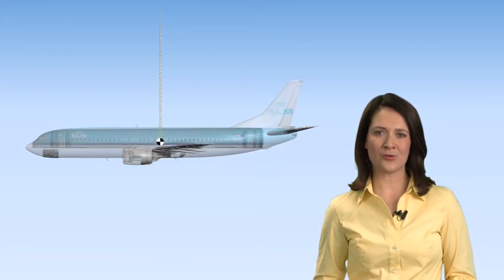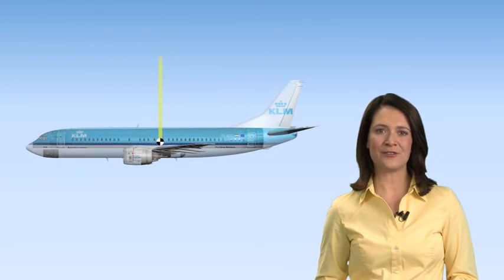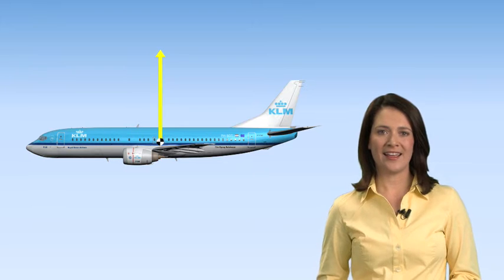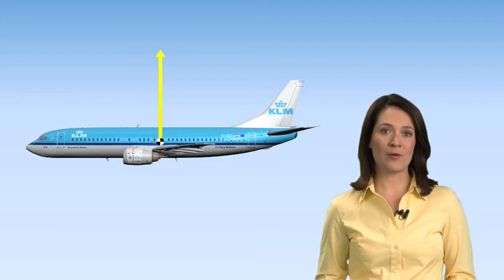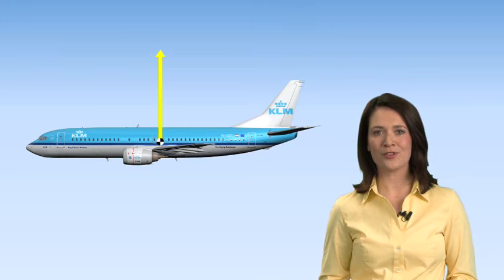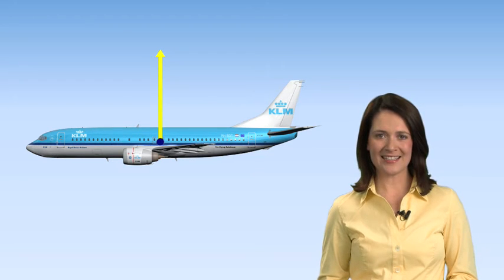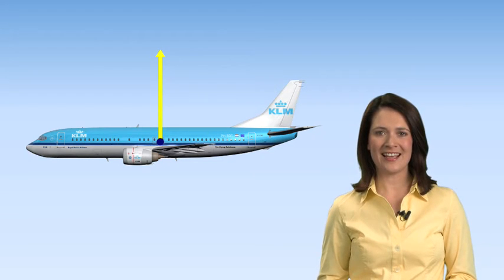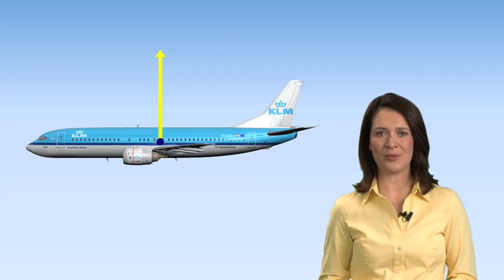Now let's replace the thread by the lift vector, representing the total lift produced by the wings. In rather the same way that weight is considered to act through one point, so too does lift — through the centre of pressure. In this case, the centre of pressure exactly coincides with the centre of gravity. The aircraft is balanced and there are no residual pitching moments.